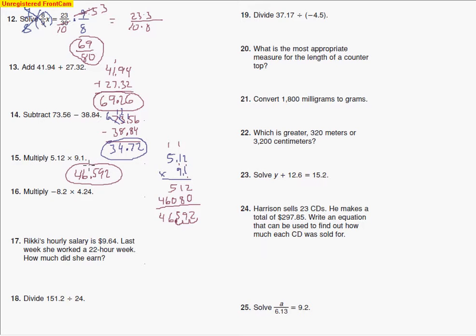The next problem, same sort of thing. The difference is we have a negative sign. So right away in your answer box, you're going to put a negative sign because one negative makes a negative. And now we'll go ahead and do the work. So I've got 4.24, and I'm multiplying by 8.2.